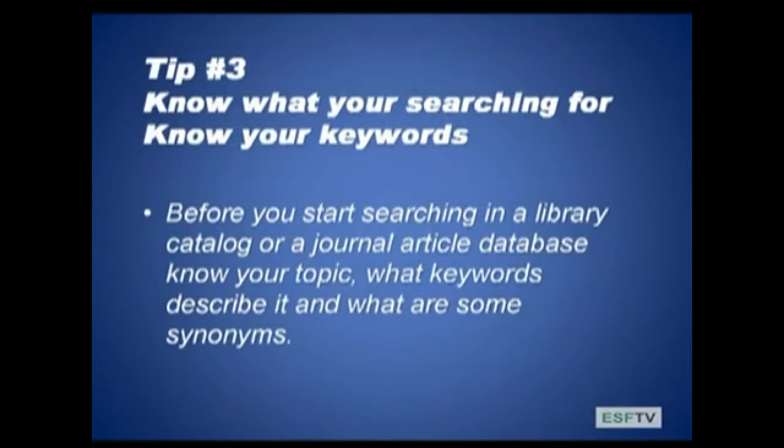Tip number three: know what you're searching for and know your keywords. Before you start searching in a library catalog or journal article database, know your topic — what are keywords that describe it and what are some synonyms? You want to have a good grasp on your topic whether you're searching the library catalog, a journal article database, or on the internet, so you don't get off track.